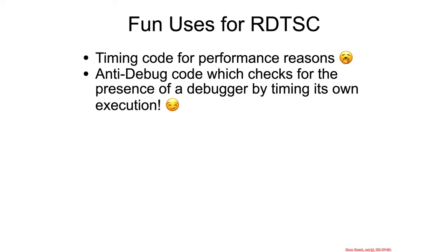So what are some fun uses for RDTSC? One is timing code for performance reasons, but I consider that a bit of a yawn. The other interesting thing for us security folks is that it can be used for anti-debug checks, where malware can actually time its own code and see whether or not it thinks it's being debugged, then change its behavior accordingly.